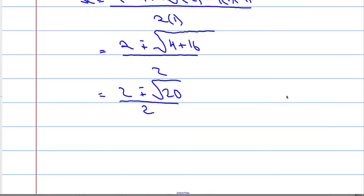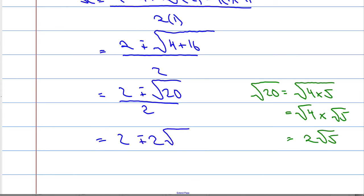Now root 20, I'm going to do this on the side. Root 20 will equal the square root of 4 times 5, which is the square root of 4 times the square root of 5. And the square root of 4 is 2, so it's 2 root 5.